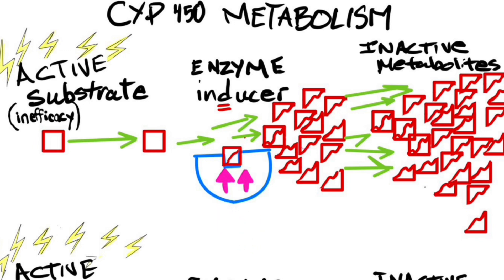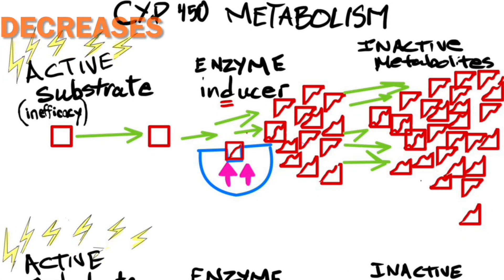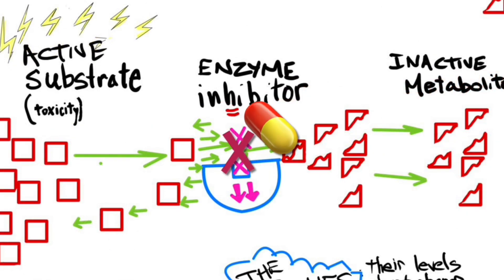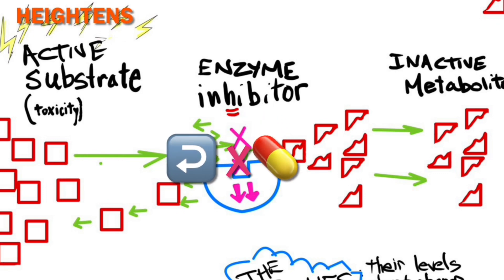When an inducer is present, the metabolism of certain drugs can be accelerated, leading to a decrease in their concentration in the body. Inhibitors are substances that inhibit or slow down activity of specific enzymes. When an inhibitor is present, the metabolism of certain drugs can be reduced, leading to an increase in their concentration in the body, and possibly toxicity.